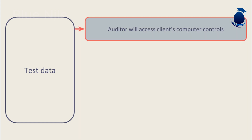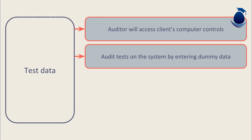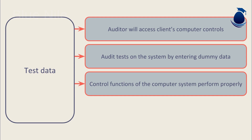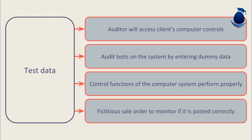Test data is where the auditor will access the client's computer controls. They perform audit tests on the system itself by entering dummy data and monitoring how it progresses through the control cycle. For example, they could enter a fictitious sales order into the sales ordering system and monitor whether it is posted correctly and whether controls ensuring it is authorized before being accepted are effective.